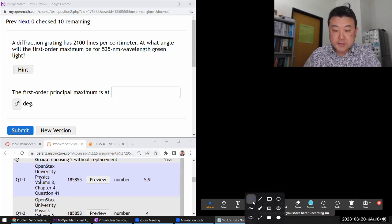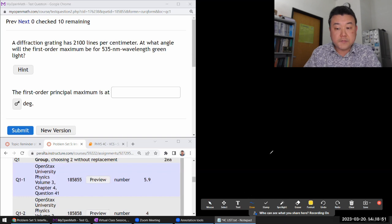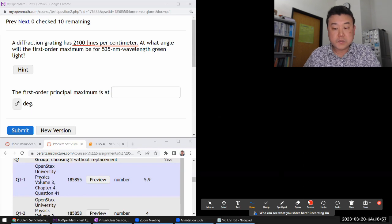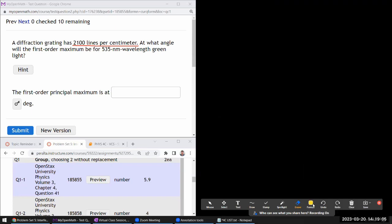This question says a diffraction grating has some number of lines per centimeter. Let me write down that information. We are given lowercase n. There's a convention where capital N means total number of lines and lowercase n is the density - the number of lines per centimeter. It's asking at what angle will the first order maximum be for some wavelength green light.